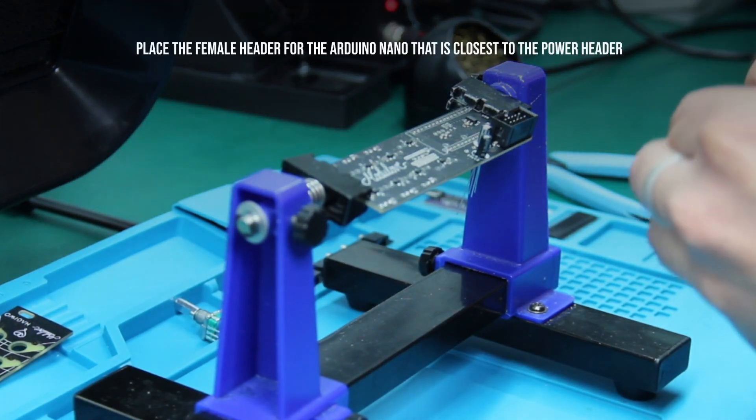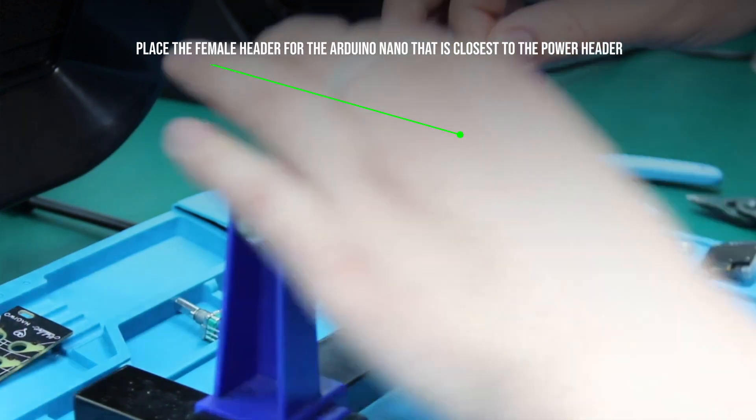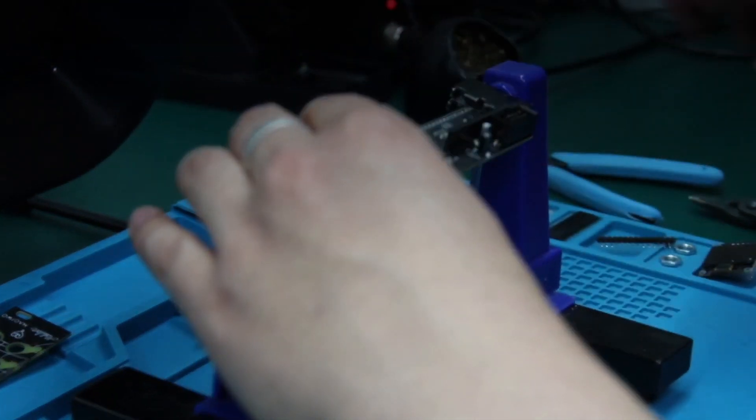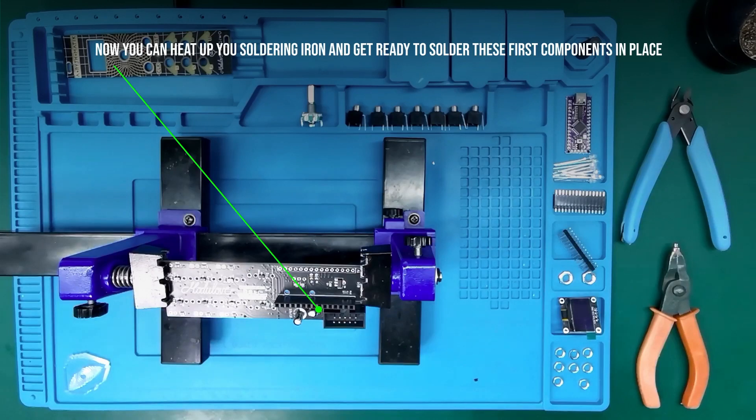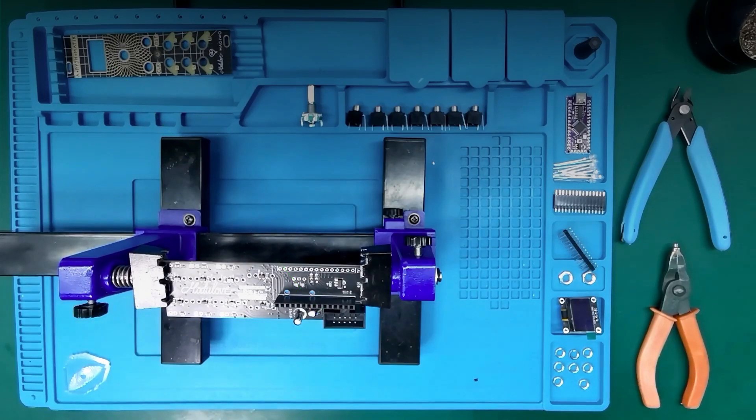Also place the female header for the Arduino Nano, which is closest to the power header. Now we can heat up the soldering iron and get ready to solder the first components in place.